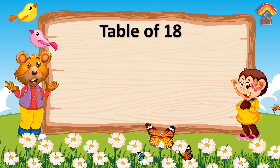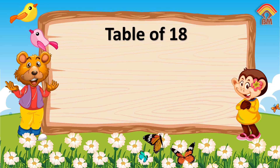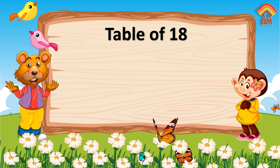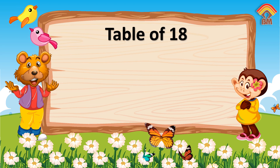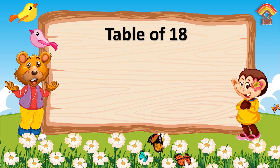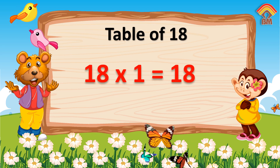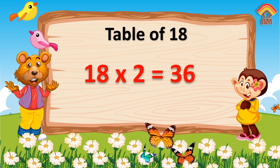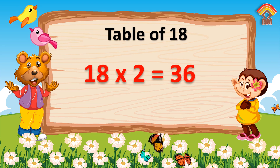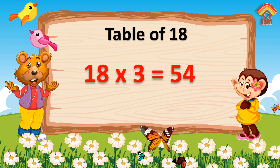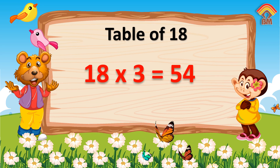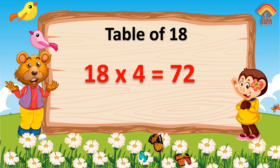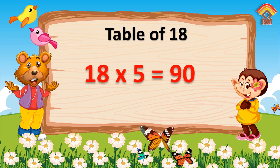Table of Eighteen. Eighteen ones are eighteen. Eighteen twos are thirty-six. Eighteen fours are seventy-two. 18 fives are 90.